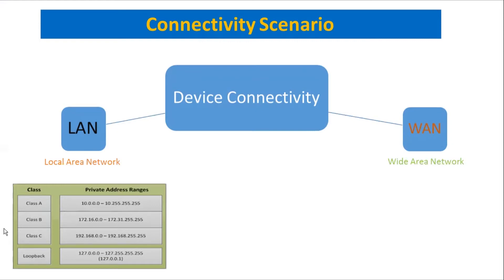For Class A, the private IP range is 10.0.0.0 to 10.255.255.255. If you have a large private LAN network, you can also configure Class B: 172.16.0.0 to 172.31.255.255. The most commonly used scheme on a LAN is Class C: 192.168.0.0 to 192.168.255.255.